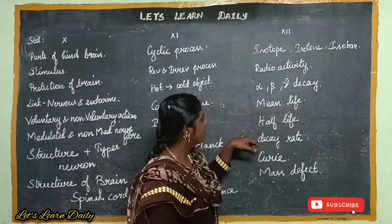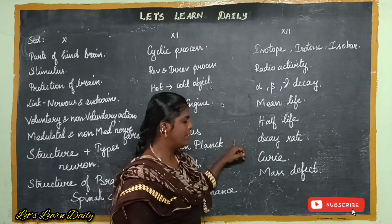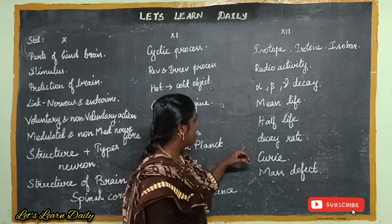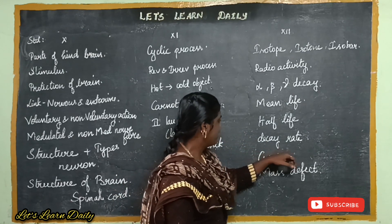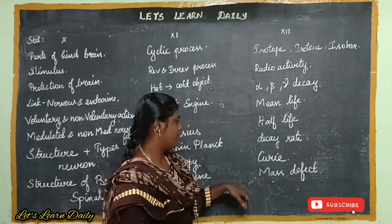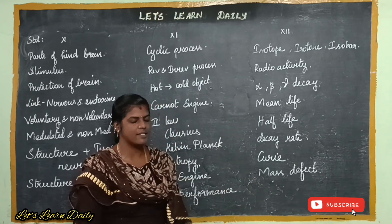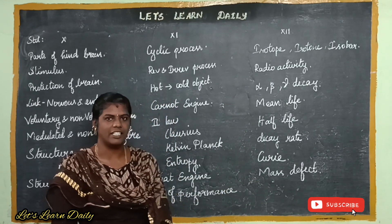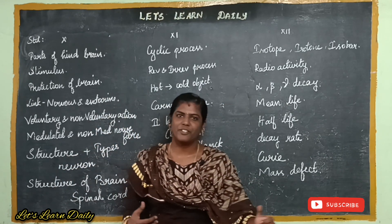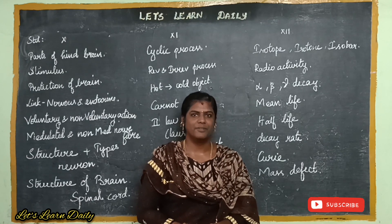Next, what is mean life and what is half life? Formula. Next, decay rate. And what is curie? And what is mass defect? So, in the short answers, let's look at this question. In the end, we will have portions of luck. Thank you.